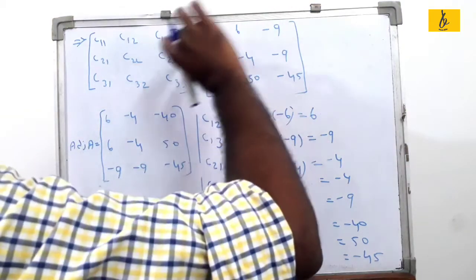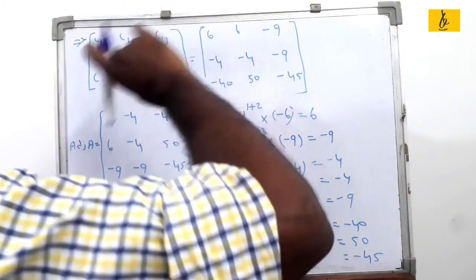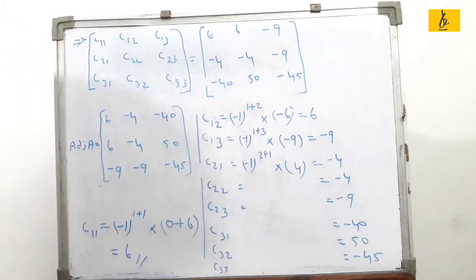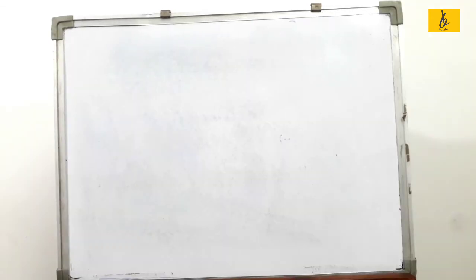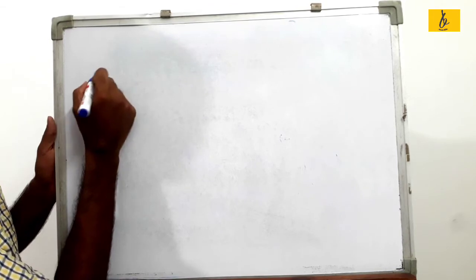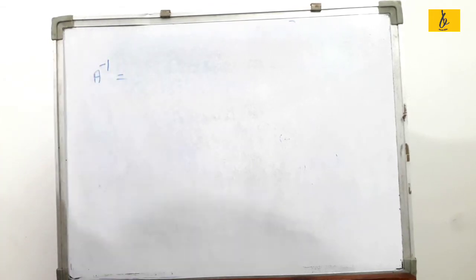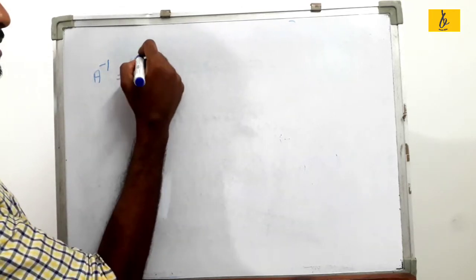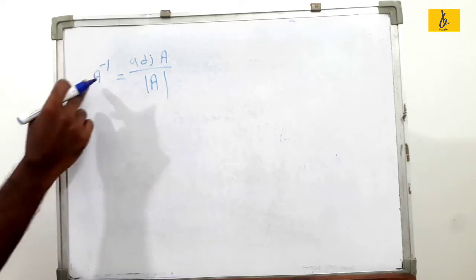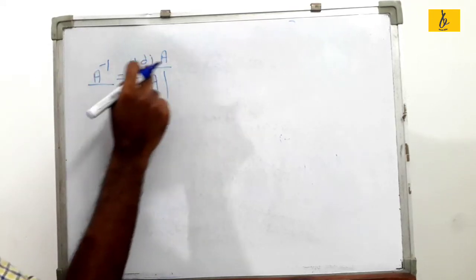The transpose of the cofactor matrix is called the adjoint. Then in the next step, we will discuss the inverse. The inverse formula is: A inverse equals adjoint of A divided by determinant of A.